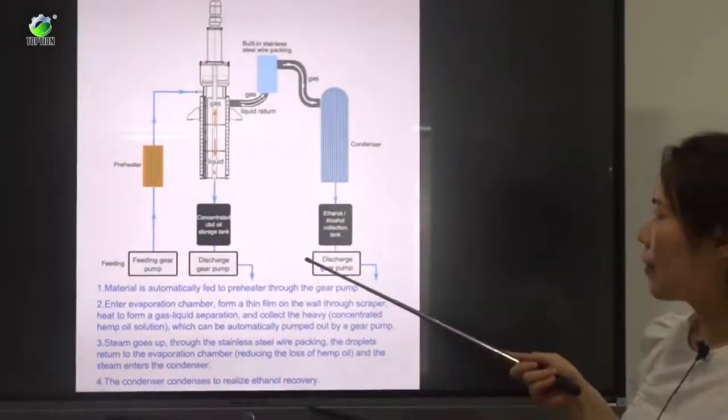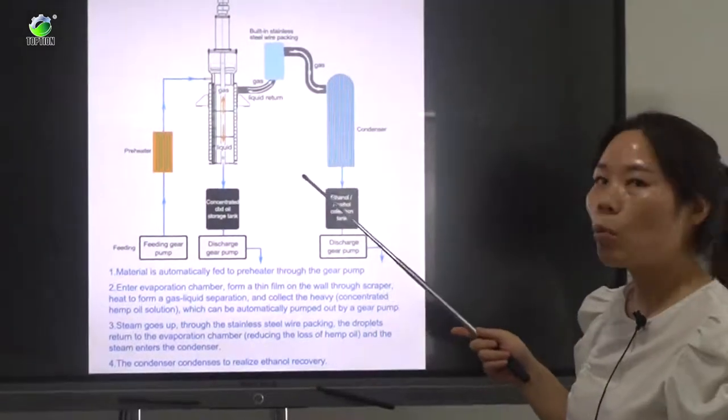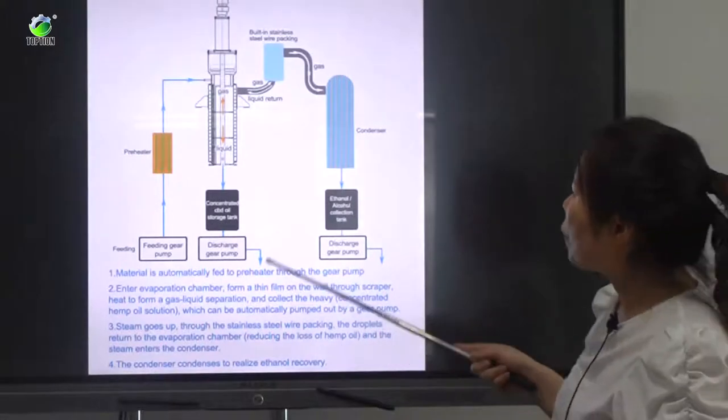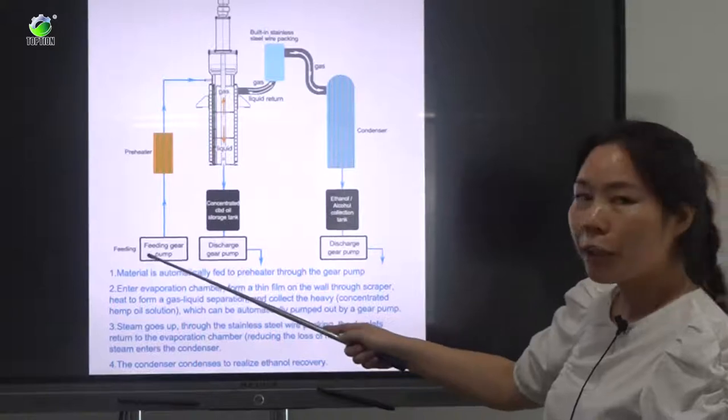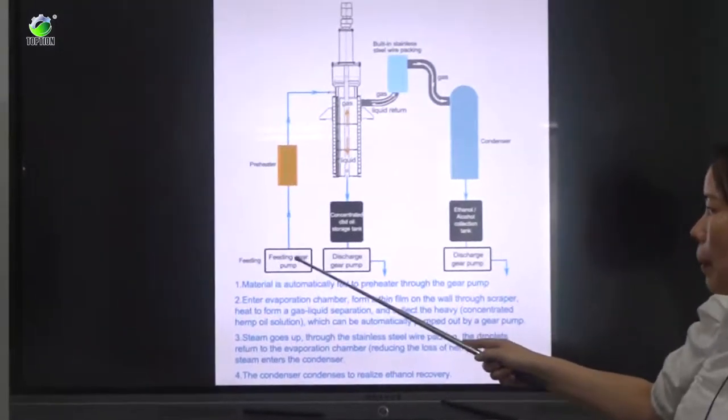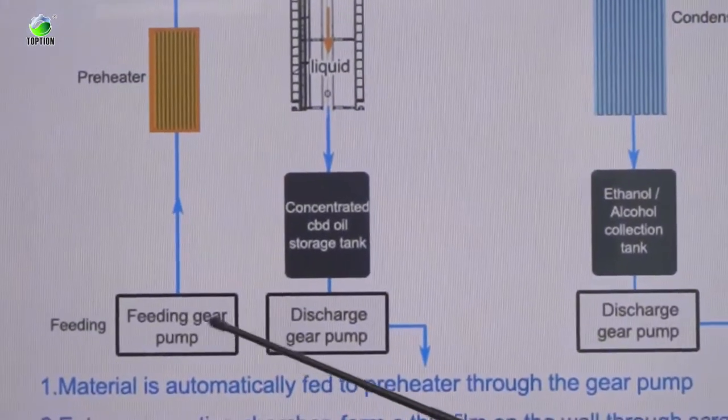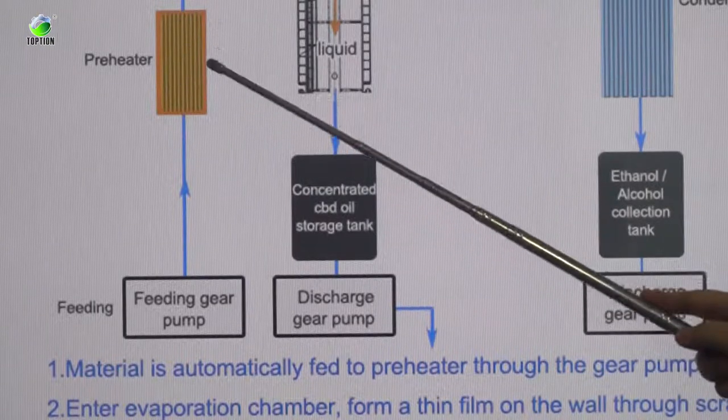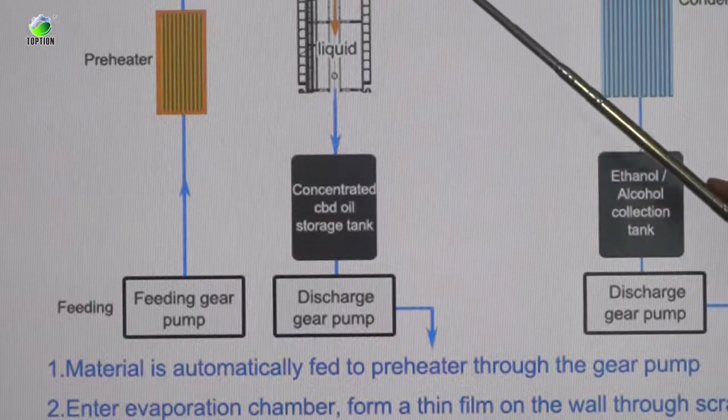And next we can see how it works. This is the working principle of wiped film evaporator. From this you can see here is feeding. We remember there is a gear pump to feed in the material here. Feeding gear pump. Then there is a preheater. After heating, the material will come in the main evaporator.